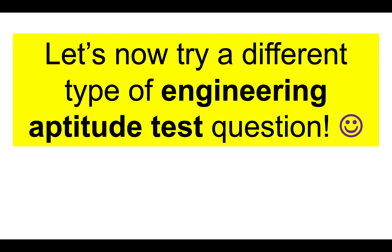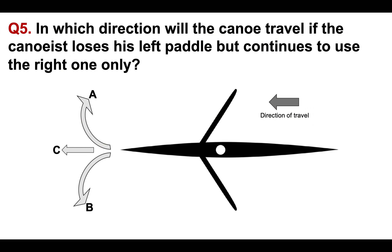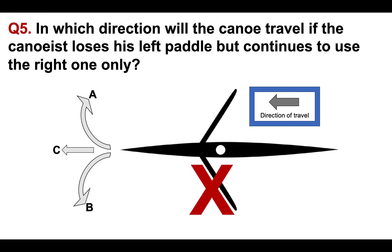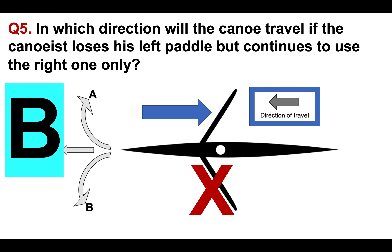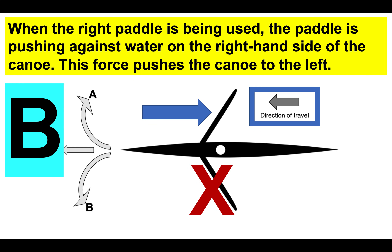Let's now try a different type of engineering aptitude test question — a little bit harder. Question five: in which direction will the canoe travel if the canoeist loses his left paddle but continues to use the right one only? The answer is B, because when the right paddle is being used, the paddle pushes against the water on the right-hand side of the canoe, and this force pushes the canoe to the left.